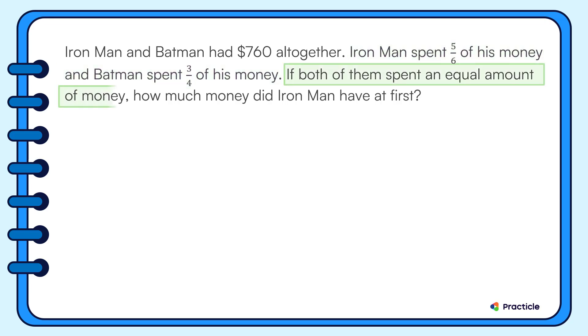If both of them spent an equal amount of money, what does this tell us? This tells us that when we compare the amount of money that Iron Man and Batman spent, five-sixths of Iron Man's money is the same amount as three-quarter of Batman's money. Let's use this information to draw our model.